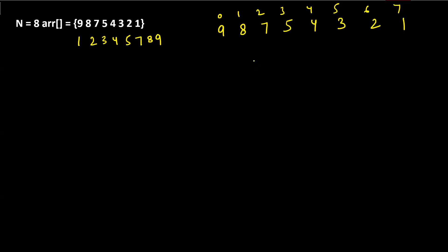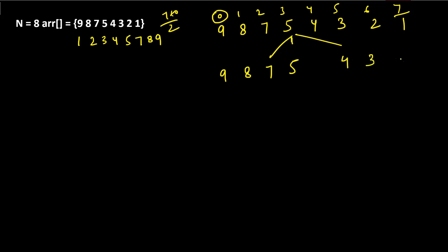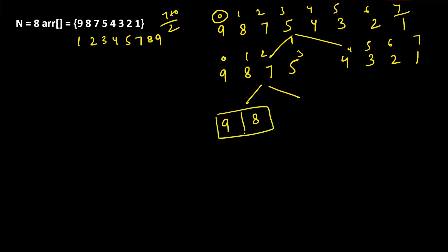Suppose the array given to us has eight elements: 9, 8, 7, 5, 4, 3, 2, 1 at indices 0 through 7. We divide the array in two halves. The first index is 0 and the last is 7, so the middle element is (7 + 0) / 2 = 3. Dividing gives us [9, 8, 7, 5] and [4, 3, 2, 1]. We divide again: middle of [9,8,7,5] is (3+0)/2 = 1, giving [9,8] and [7,5].